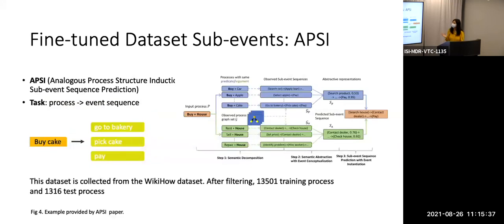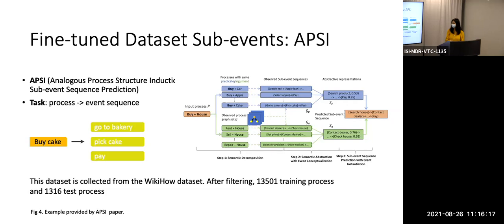Our actual dataset is based on WikiHow. As we can see in the picture, we have an input process like 'buy a house,' and after inferencing we have a series of outputs like 'search house' and 'contact dealer.' After filtering, this dataset has over 10,000 training processes and about 10,000 test processes. We'll basically take a pre-trained model and use their training and test split to see our performance.